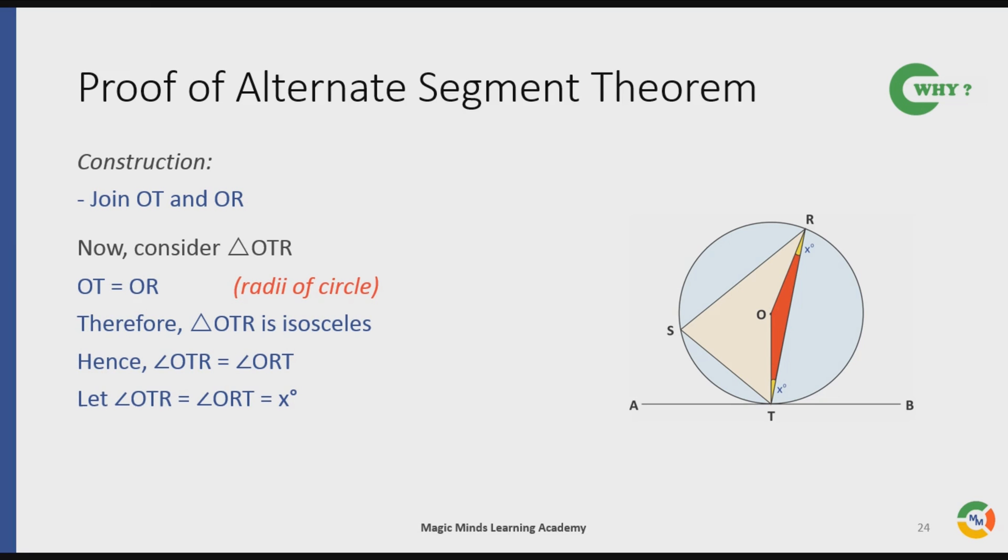Hence angle TOR will be equal to 180 minus 2x degrees, as sum of angles of a triangle is equal to 180 degrees.